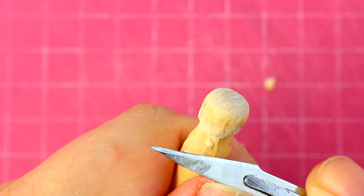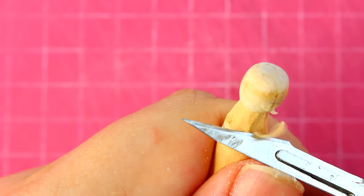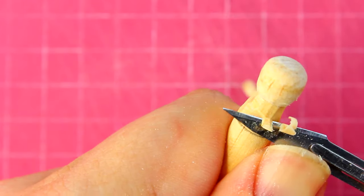The closer you can put the place where you're applying force to where the knife is actually cutting, the better. Here I'm using my thumb to put force on the blade directly behind where it's cutting. That means I have to use the minimum amount of force necessary to get the knife to go through the wood.